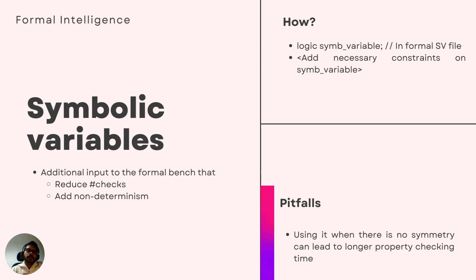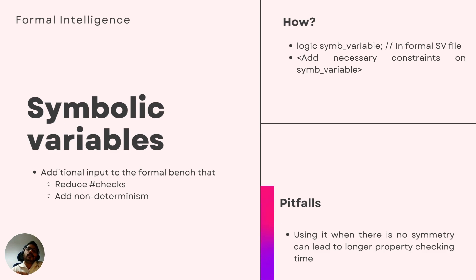The third technique is the use of symbolic variables. Symbolic variables are additional undriven inputs that you can introduce in your formal testbench. This helps mainly in two different scenarios. One, reducing the number of checks if a design has symmetrical elements — if you use symbolic variables when the design is not symmetric, it will be less efficient and may take longer to prove or find a counterexample. Two, introducing non-determinism in your checks to make them more generic and ensure they cover more scenarios. You can implement it by defining a logic and then adding necessary constraints on the symbolic variable as required.